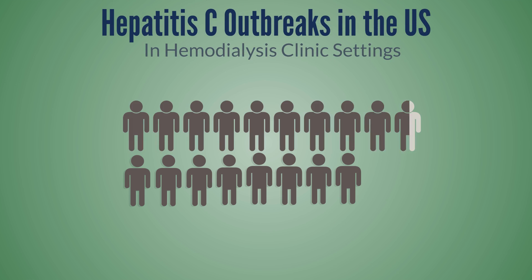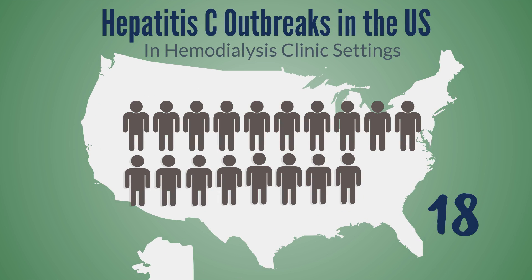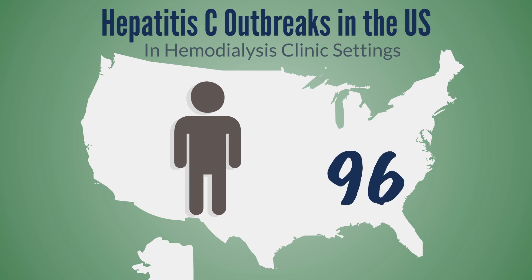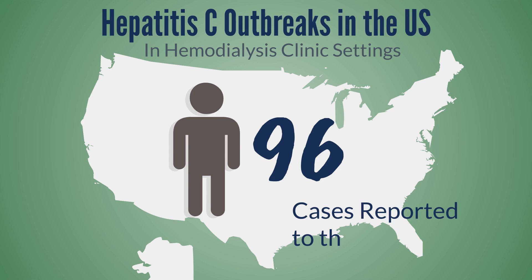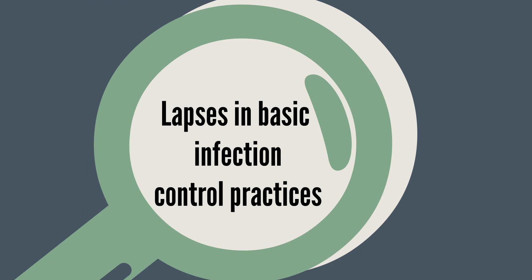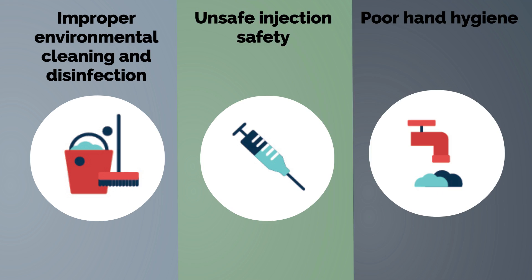In recent years, there have been at least 18 outbreaks of hepatitis C in hemodialysis clinic settings across the United States, with at least 96 cases reported to the Centers for Disease Control and Prevention. Investigators found that these outbreaks were associated with lapses in basic infection control practices, including improper environmental cleaning and disinfection, unsafe injection safety, and poor adherence to hand hygiene.